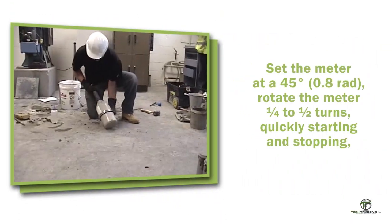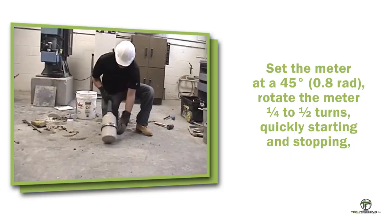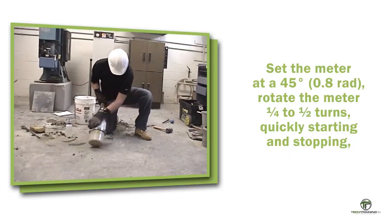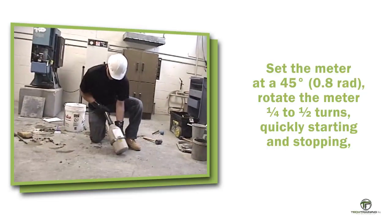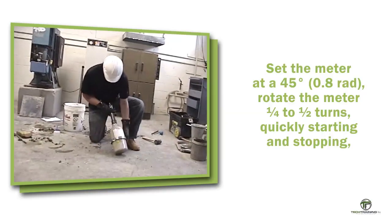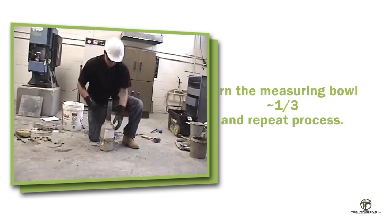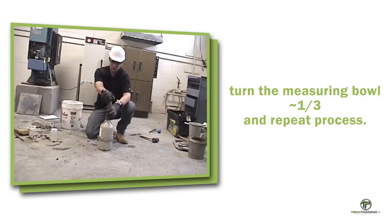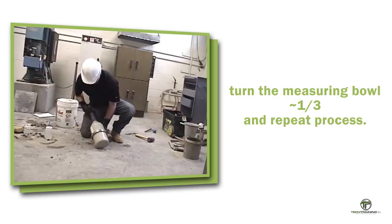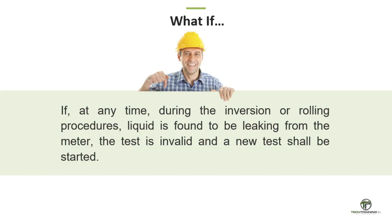Place one hand on the neck of the meter and the other on the flange. Using the hand on the neck, tilt the top of the meter approximately 45 degrees or 0.8 rad from vertical with the bottom edge of the measuring bowl resting on the work surface. Using the hand on the flange to rotate the meter, vigorously roll the meter one-quarter to one-half turn forward and back several times, quickly starting and stopping the roll. Turn the measuring bowl about one-third of a turn and repeat the rolling procedure. Continue the turning and rolling procedures for approximately one minute. The aggregate must be heard sliding in the meter during this process. If liquid is found leaking from the meter at any time, the test is invalid and a new test shall be started.